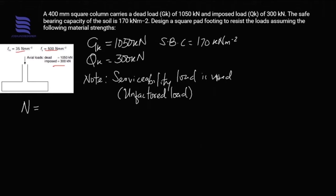We have 1.0 Gk plus 1.0 Qk, applying a factor of one to the dead load and a factor of one to the live load, which is the same as using Gk plus Qk, the unfactored load. We have 1050 plus 300, so the value of N, the total load, is 1350 kilonewtons.